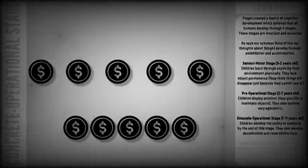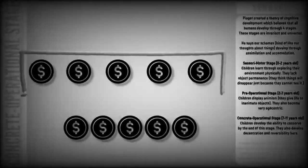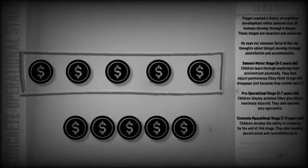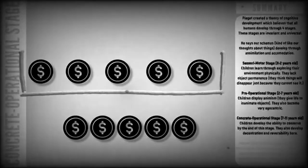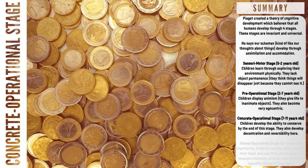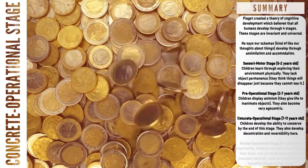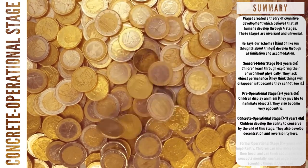However, if I did this, then a child at the start of the concrete operational stage may incorrectly tell me that this row has more coins. This means children at the start of this stage may struggle to conserve, and as they come to the end of the stage, they manage it.